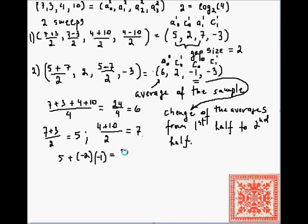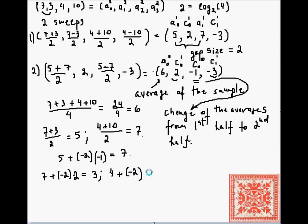So 5 plus (-2) times (-1) gives 7 — that's the change. The wavelet coefficient 2 represents the change from the first quarter to the second quarter: the first quarter is 7, and 7 + (-2)*2 gives 3. The coefficient c^1_1 is the change from the third quarter to the fourth quarter: 4 + (-2)*(-3) = 10. So all original values are recoverable.